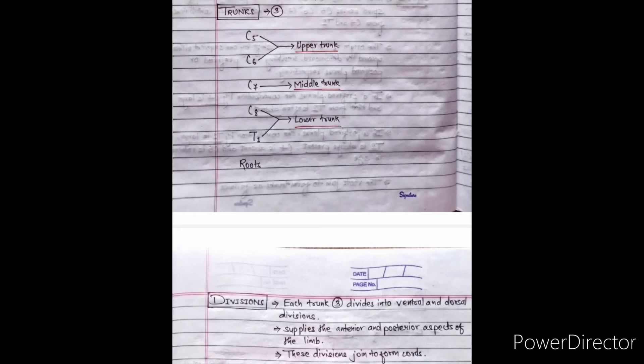The trunks are three in number. The C5 and C6 roots join to form the upper trunk, root C7 forms the middle trunk, and roots C8 and T1 join to form the lower trunk. Each trunk — three in number — divides into the ventral and dorsal divisions, which supply the anterior and posterior aspects of the limb.